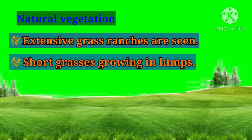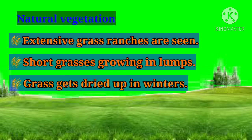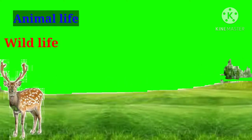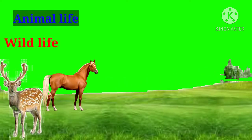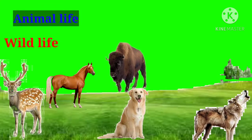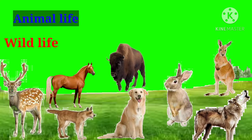Natural vegetation: Extensive grass ranches are seen, with short grasses growing in clumps. Grass gets dried up in winter. Elder and poplar trees are also found here. Animal life: Wildlife includes deer, horses, dogs, wolves, bisons, rabbits, hares, kangaroos, dingoes, etc.